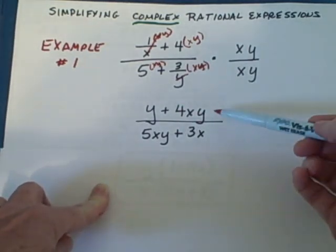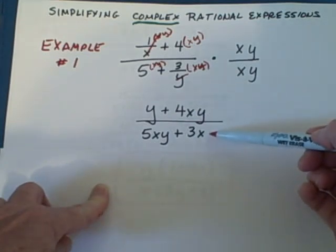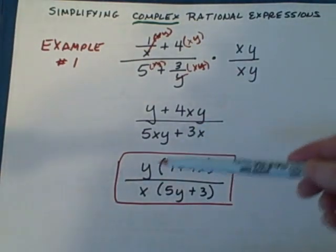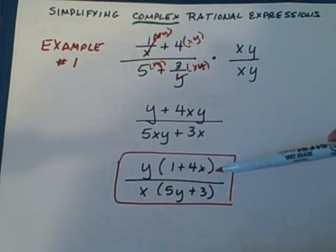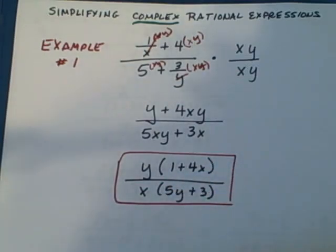I can then factor out what's common in the numerator. I have a y that's common and in the denominator I have an x that's common. And when I factor those out I get y times the quantity 1 plus 4x divided by x times the quantity 5y plus 3. And that's my solution.